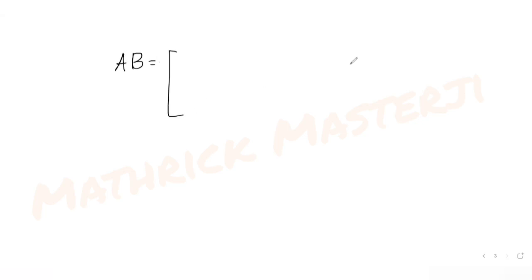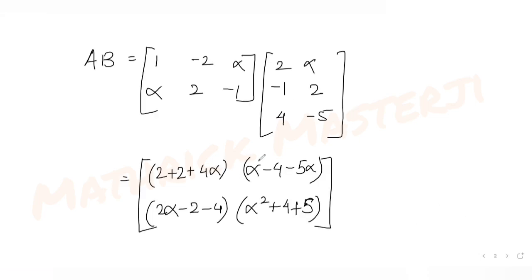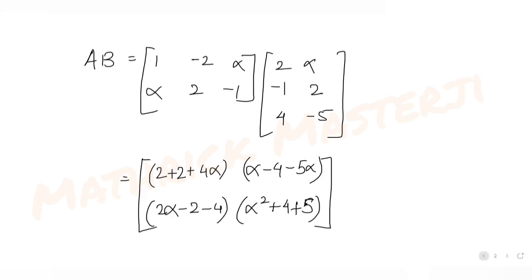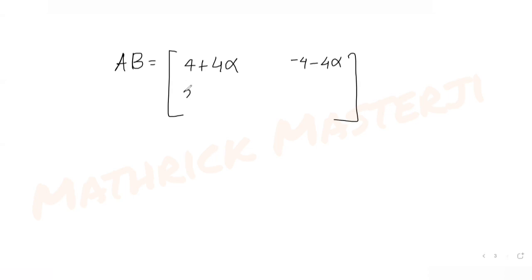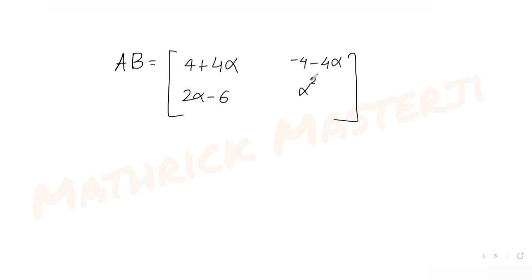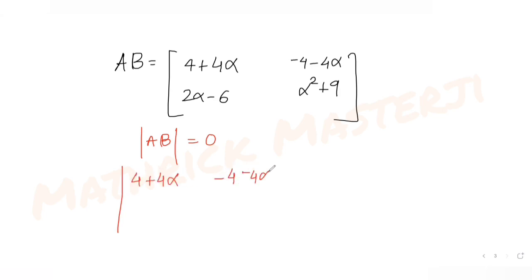So the matrix A·B comes out as [4+4α, -4α-4; 2α, 2α-6; α²+9]. Now the question tells us to find the condition where the determinant of A·B equals zero. So if I set det of [4+4α, -4-4α; 2α-6, α²+9] equal to zero.